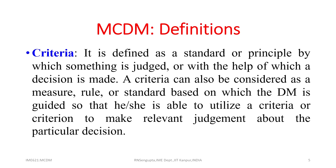Criteria need not be only one — it can be a set of criteria. Considering buying a car, you can have different companies such as Volkswagen, Maruti, or Hyundai in front of you. The set of criteria can include price, maintenance cost, mileage, safety features, color of the car, and how stable the car is — different ways of analyzing when buying a car.